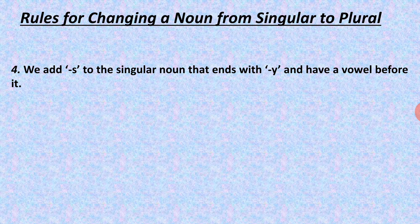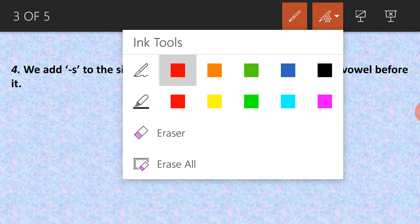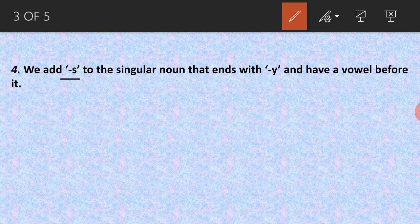We add 's' to the singular noun that ends with 'y' and has a vowel before it. Generally, we add 's' at the end of any singular noun when it ends with 'y', but there must be a vowel before that 'y'. That means 'y' is coming at the end and just before 'y' there is a vowel — a, e, i, o, u.